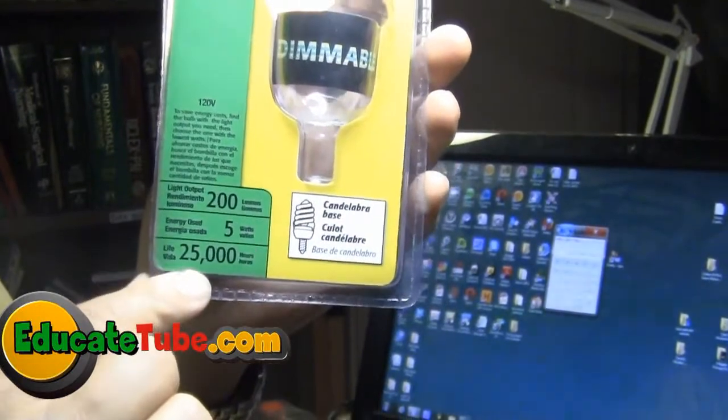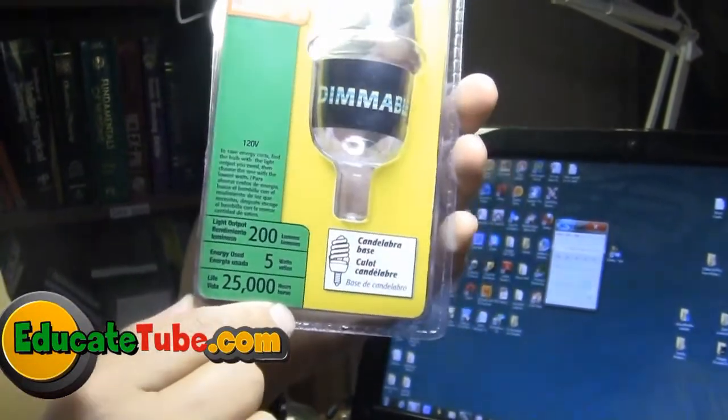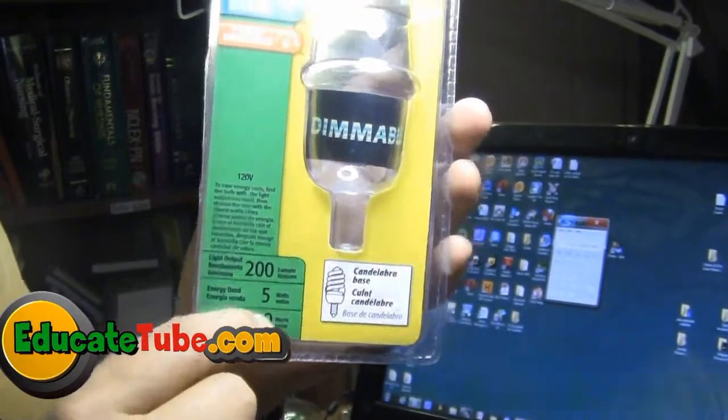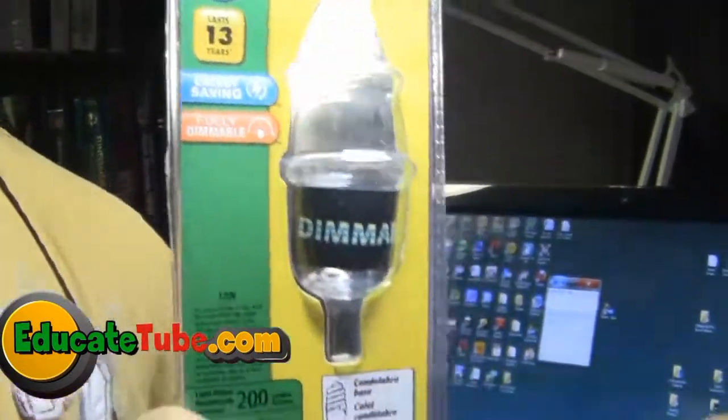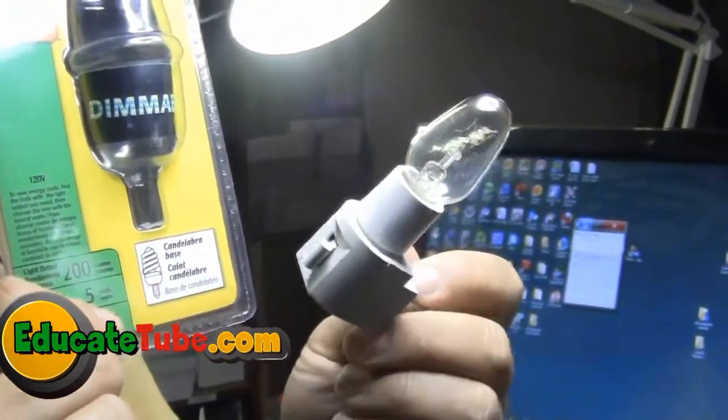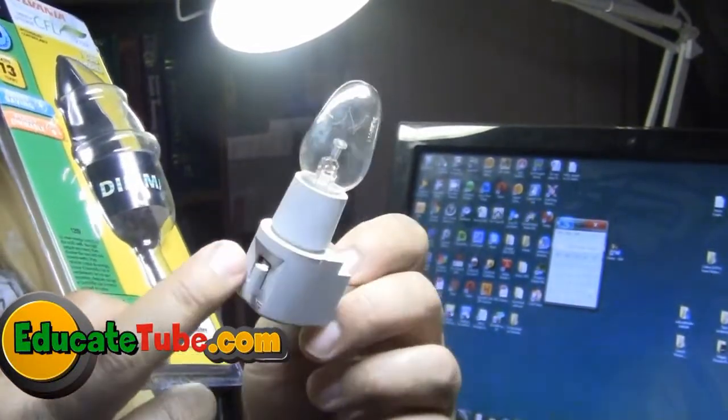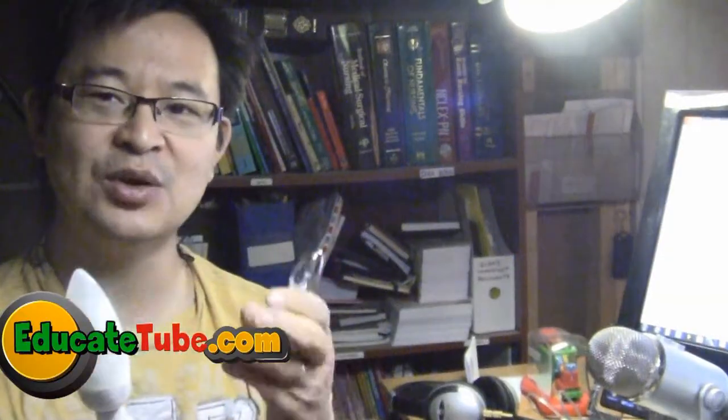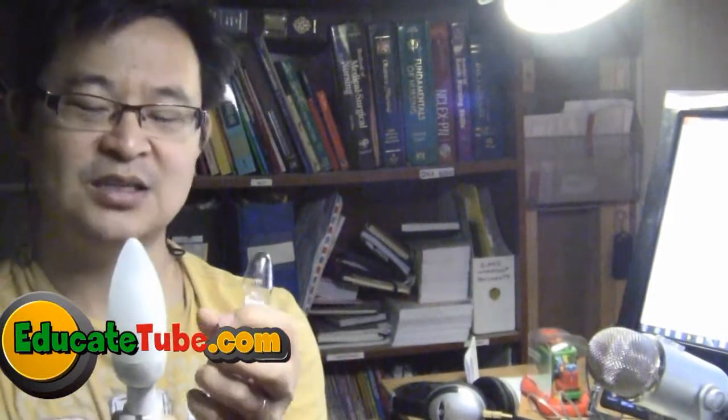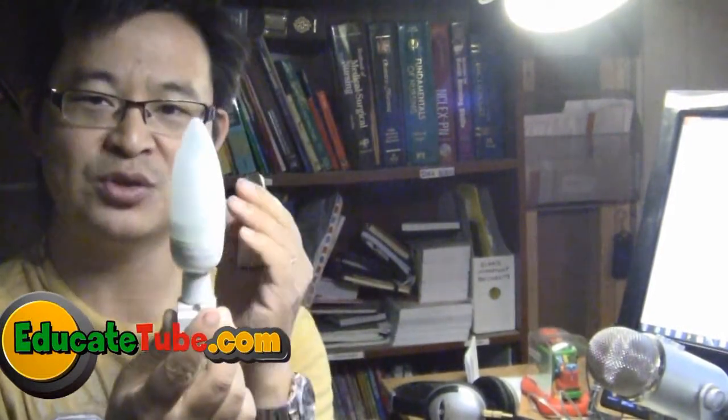The company claimed that this light bulb lasts about 25,000 hours. In comparison to a 7 watt incandescent light bulb, this only lasts between 3 to 5,000 hours. So you can see already the advantage of this because it is brighter but uses less energy.